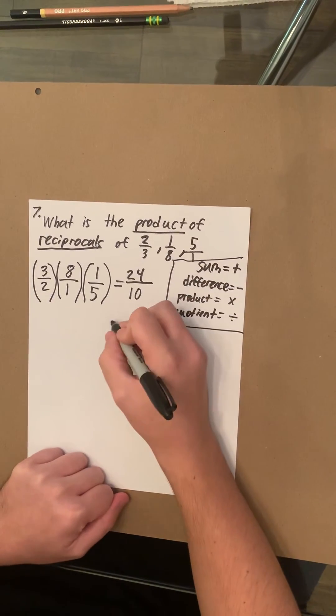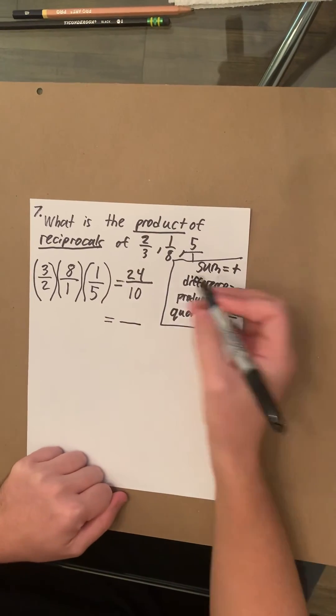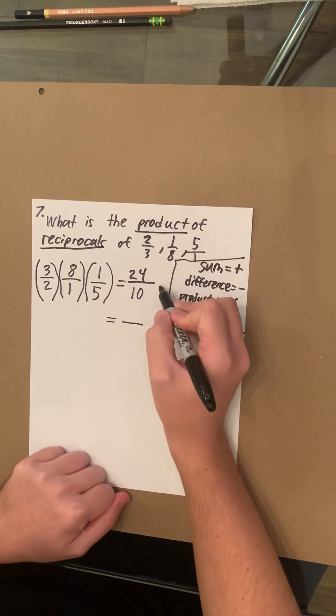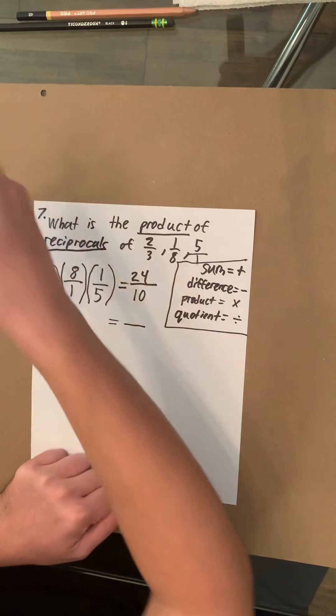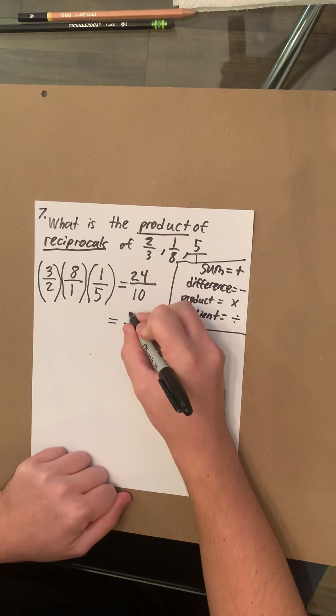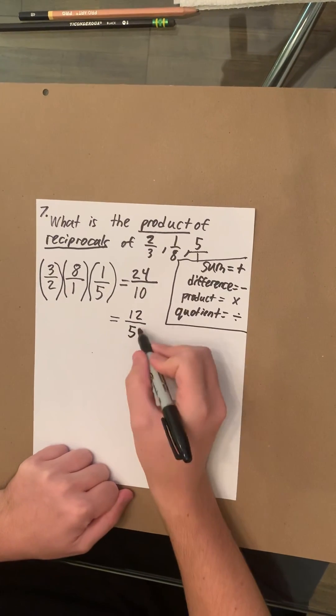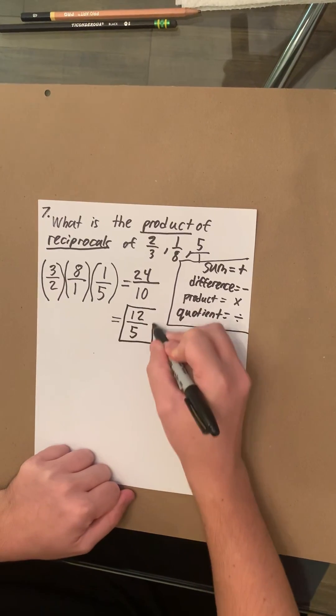But that can be simplified. In math, they always want every answer simplified. They want it to be as small as humanly possible. So you would divide 24 over 10 by two. So it would be 12 over five. That can no longer be simplified. So that is your answer.